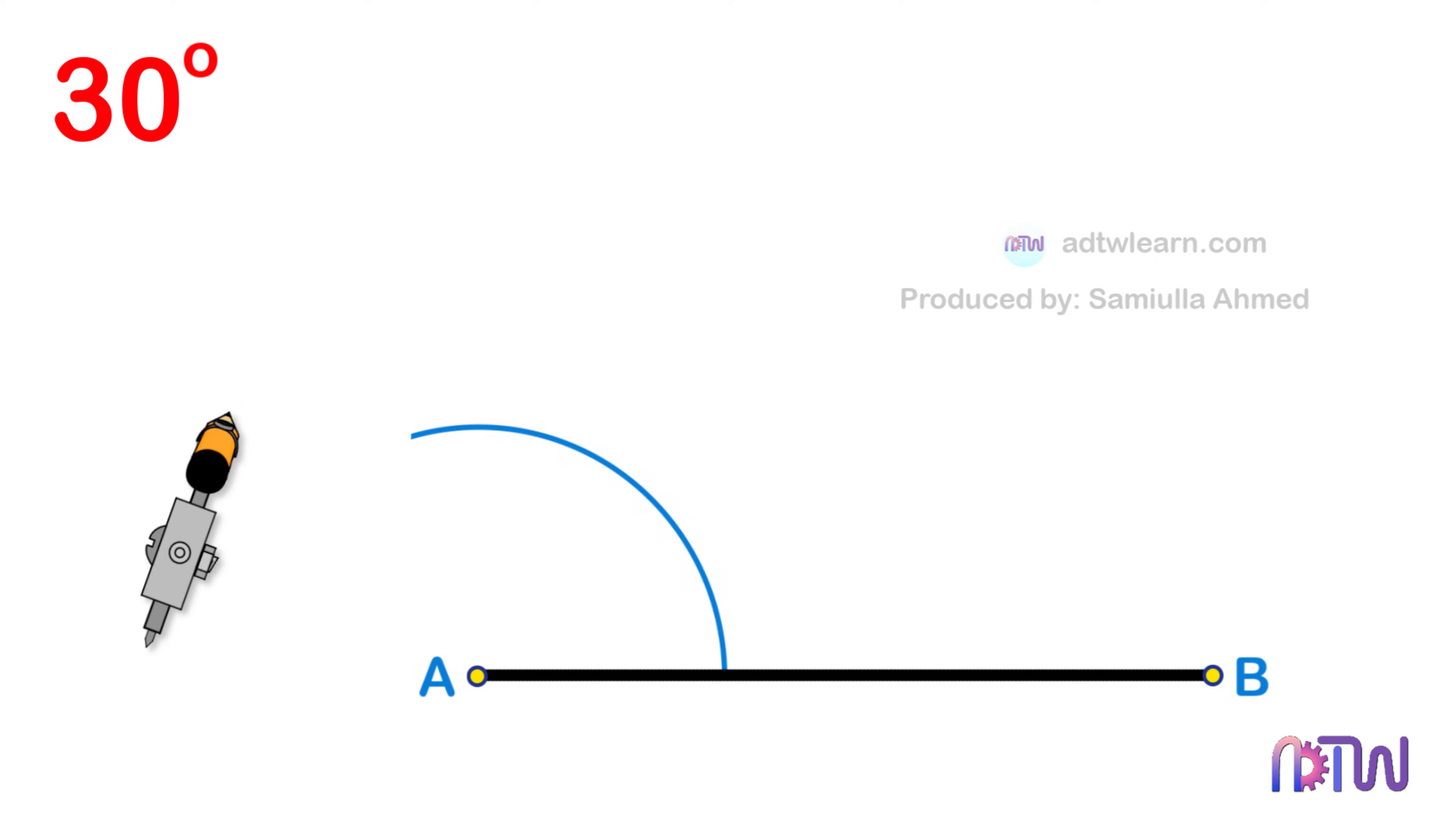After this, without changing the length of the compass, and using this intersection point as a center, cut another arc as shown.